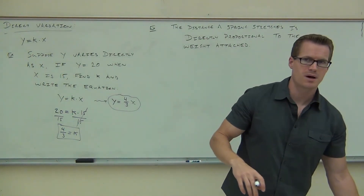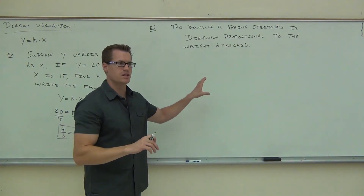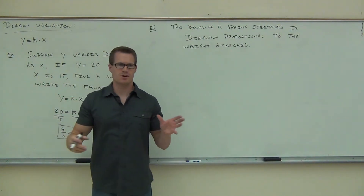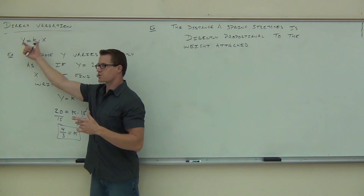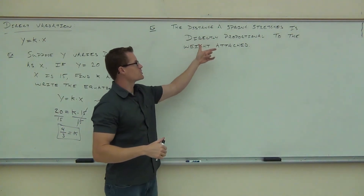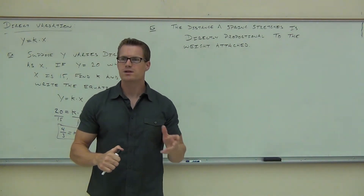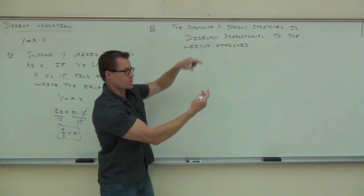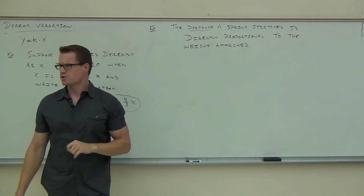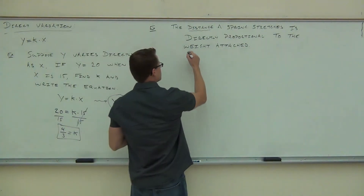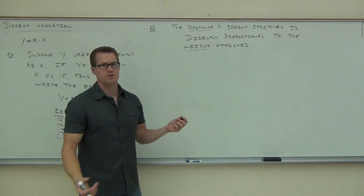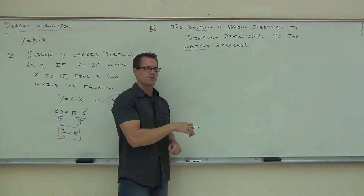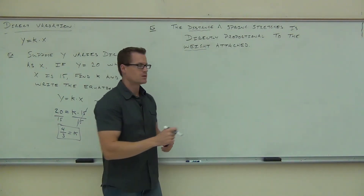Right now I want to make sure we're understanding how to set up the equation. We don't always have to have y and x — y and x are dummy variables. In our case, the distance a spring stretches is directly proportional to the weight attached. My two variables are distance and weight. Maybe we use d for distance and w for weight. So how do we write the equation? d equals k times w.